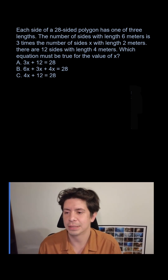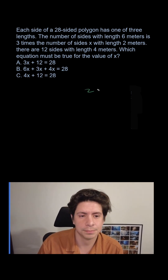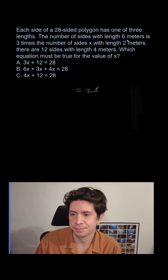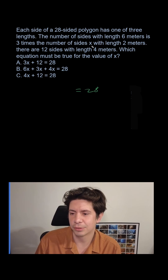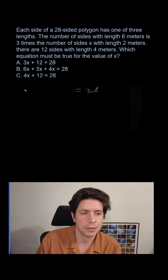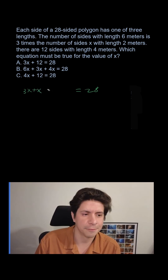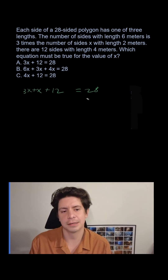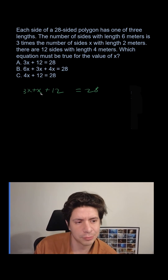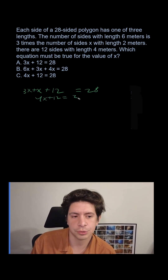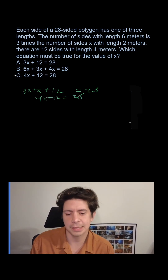There are 28 sides total. The number of sides with length six meters is three times x, so that's 3x, plus x for the two-meter sides, plus 12 for the four-meter sides. That gives us 4x plus 12 equals 28, and that is answer choice C.